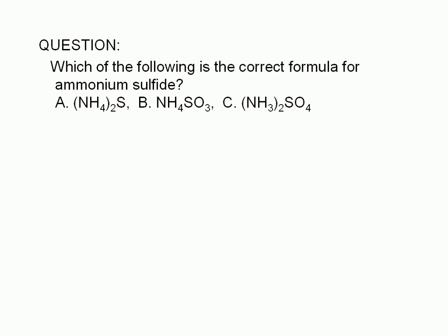To determine the formula of a compound given its name, we need to first classify the compound and then apply the rules that apply for that type of compound. Ammonium sulfide is an ionic compound.